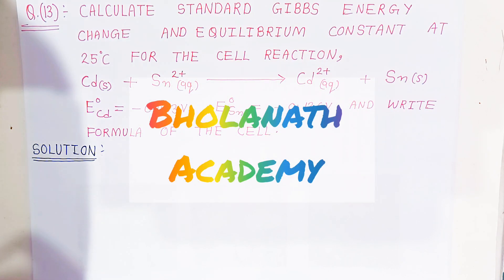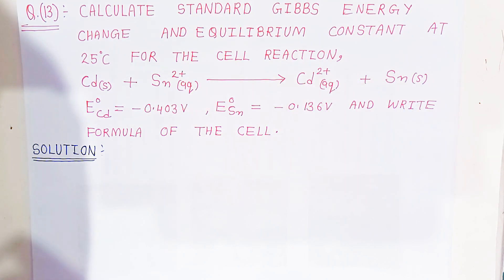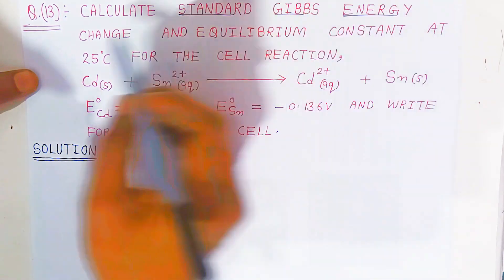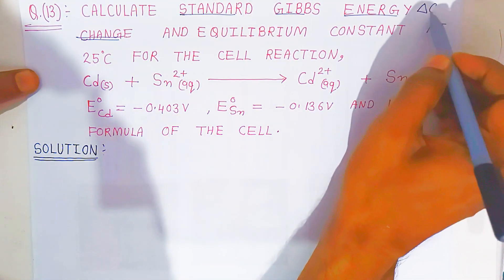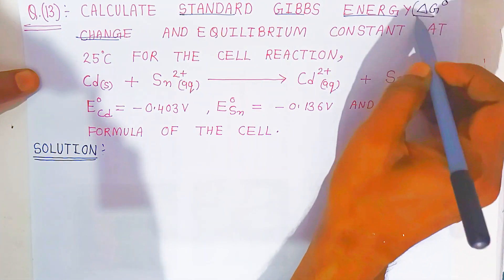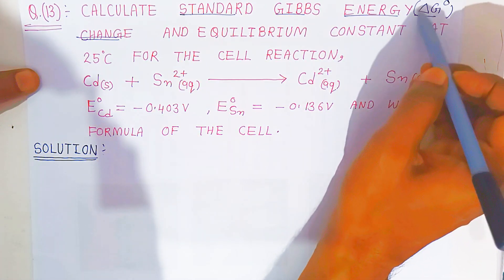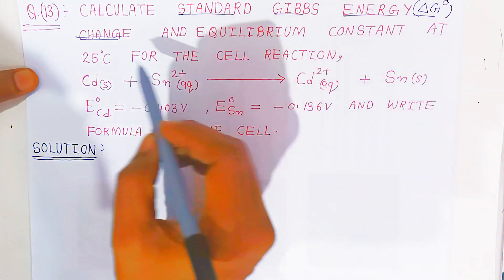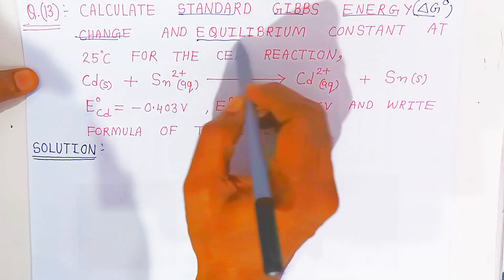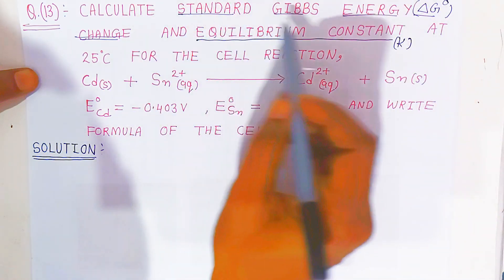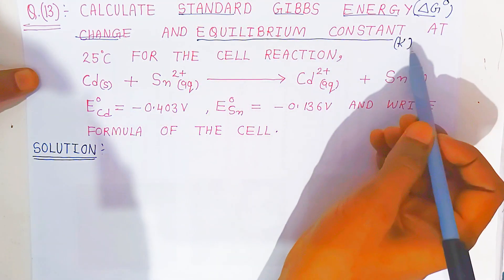Hello students, welcome to Bolanath Academy. In this video we are going to see question number 13. We have to calculate standard Gibbs energy change — that is delta G° — and the equilibrium constant capital K at 25 degrees for the given cell reaction.